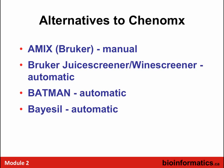Other tools have come along to make this more automatic. Bruker, an NMR company, has a tool called Amix, and also offers juice and wine screening. There are open-source efforts such as Batman from Imperial College for automated deconvolution, and Basil, which you will use today for automated deconvolution.